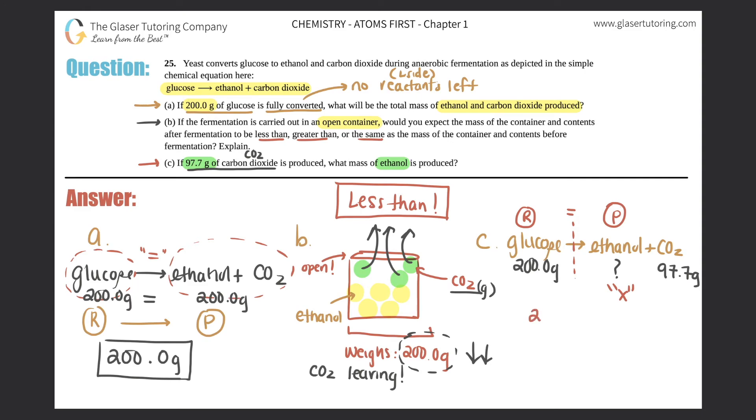Right, 200.0 grams of glucose would have to equal the two things that are on this side, so x plus 97.7 grams, minus 97.7 to get x by itself, and x would tell you how much is left over. So that is 102.3 grams, and that's how much ethanol would be produced.